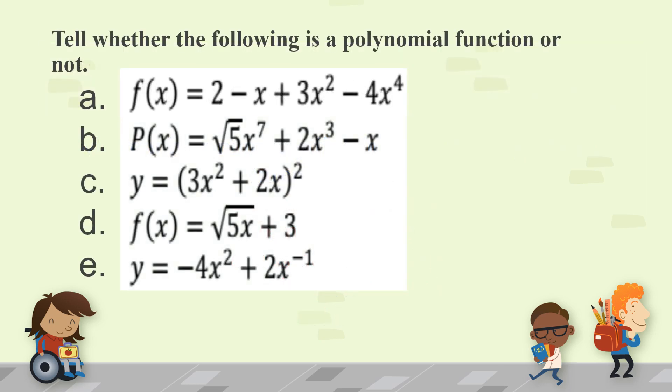Tell whether the following is a polynomial function or not. Let's have example letter a. f(x) = 2 - x + 3x² - 4x⁴. This is a polynomial function. Why? Because the exponents are positive integers. So, positive 2 and positive 4.